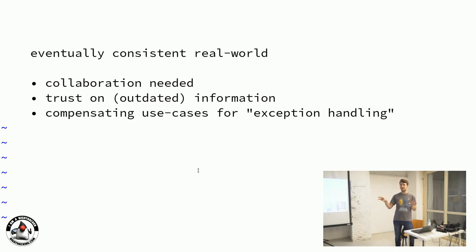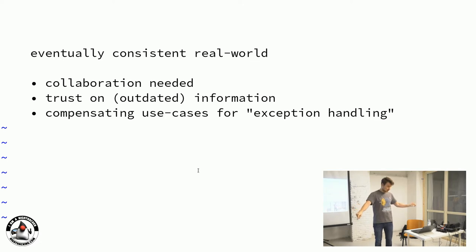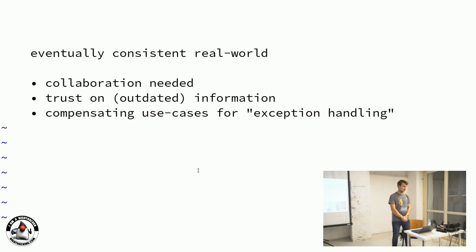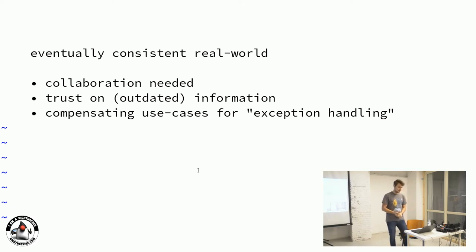What would a consistent restaurant look like? You order the burger, the waiter shouts 'nobody moves, stop,' goes to the kitchen, you wait, everybody else waits, the chef prepares the burger, the waiter comes back and says 'yes, here it is, now everybody can continue.' Of course this wouldn't scale. The waiter maintains an internal cache of whether you have burgers, but this can be outdated — once the delivery truck updates the ingredients, the information is stale. The business has to be aware of this and build compensating use cases for when things go wrong.